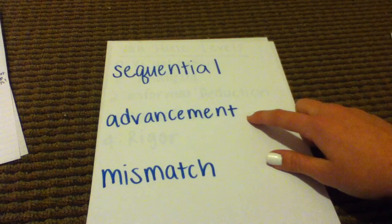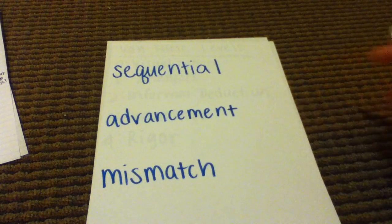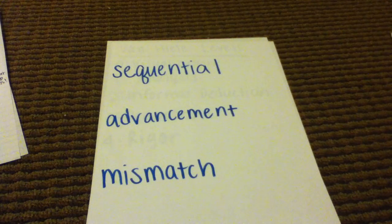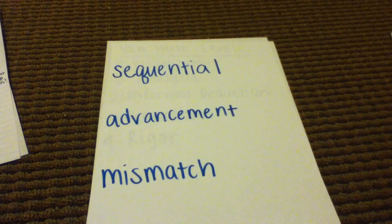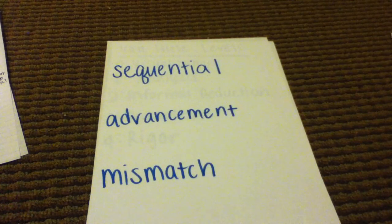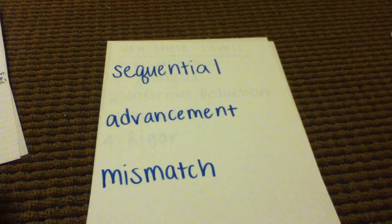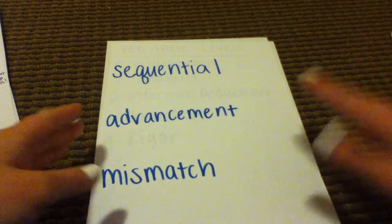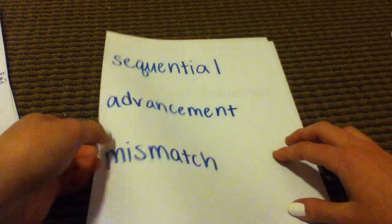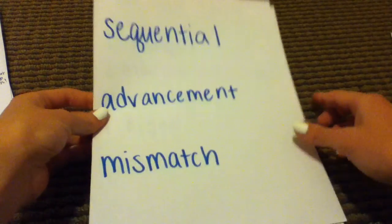The next key characteristic is advancement, which means that progress depends on the content, not the age of the student. You might assume a child should be at a certain level at a certain grade or age, but that's incorrect — it's based on where they are according to the content they know.